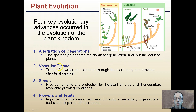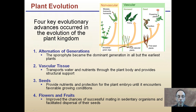Vascular tissue transports water and nutrients from the plant body and provides structural support — another key evolutionary advancement. Another key advancement is the development of seeds, which provides nutrients and protection for the plant embryo until it encounters favorable conditions to grow. The last advancement is flowers and fruits, considered the most advanced plant species, which improved chances of successful mating and facilitated dispersal of seeds.